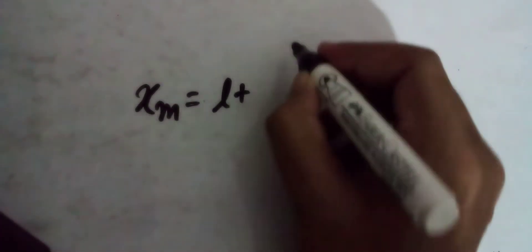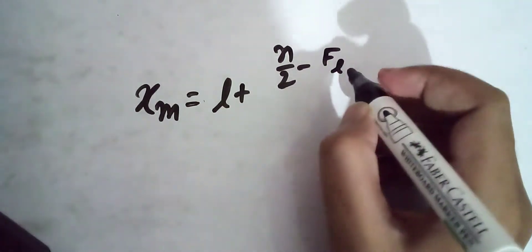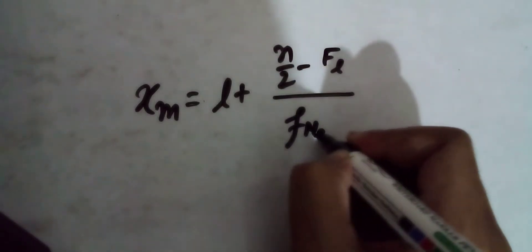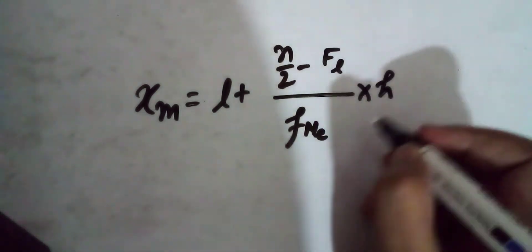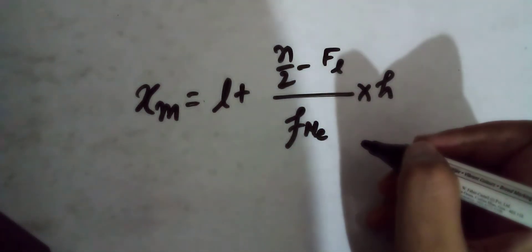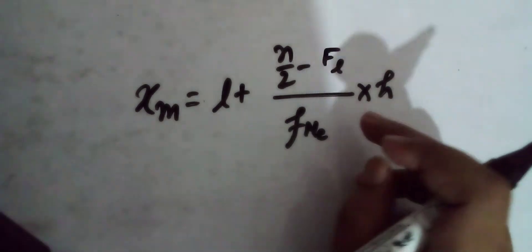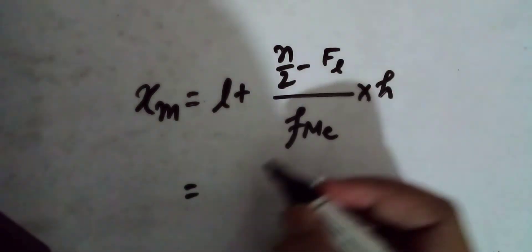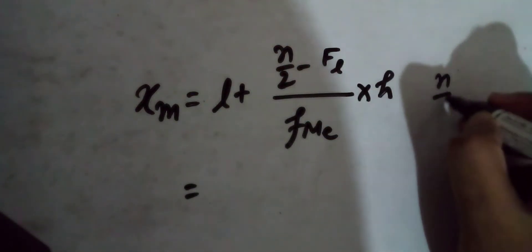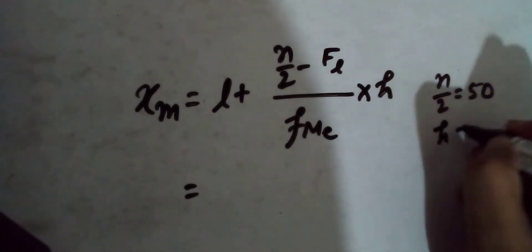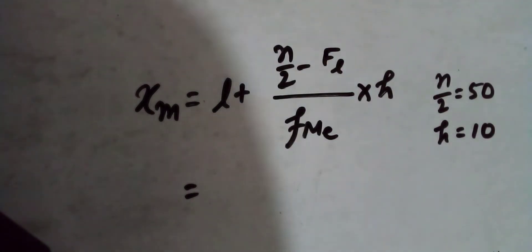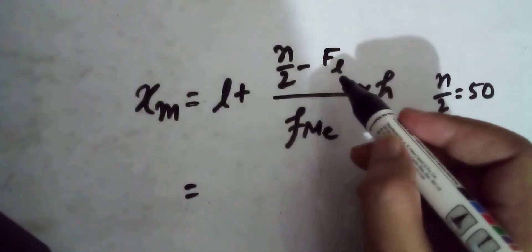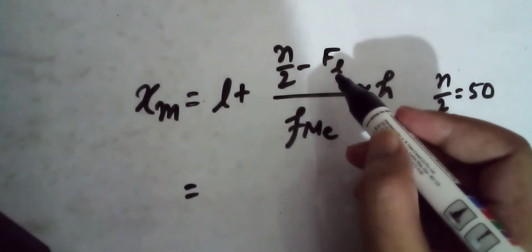Now let's verify this using the formula. The formula for median is: x_m = l + ((n/2 - F) / f_me) × h, where n by 2 equals 50 and h equals 10.